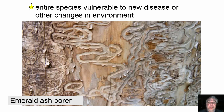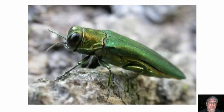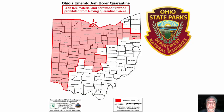Entire species would be vulnerable to new diseases and other environmental changes — for example, the emerald ash borer. In our local park, hundreds of trees had to be cut down because of this insect that destroys trees. It's a pretty-looking bug, but it's absolutely destructive. The state of Ohio has quarantines in place.